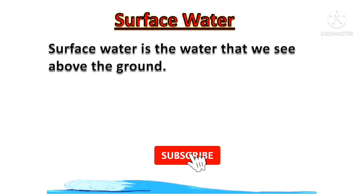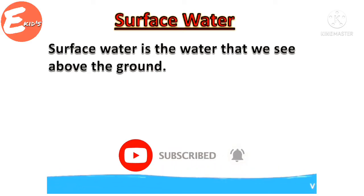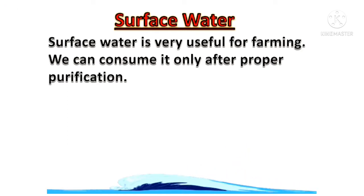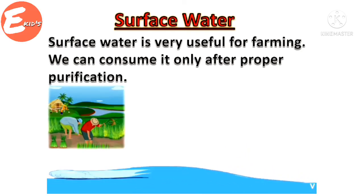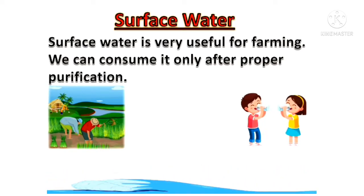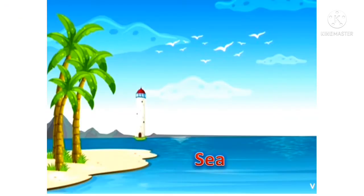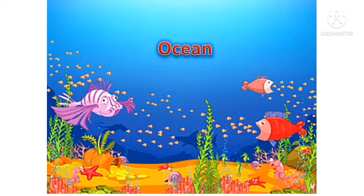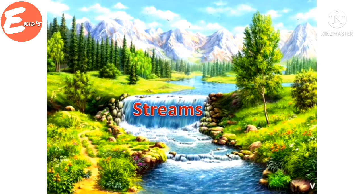Surface water is the water that we see above the ground. Surface water is very useful for farming. We can consume it only after proper purification. Some examples of surface water are river, lakes, sea, ocean, pond, and streams.